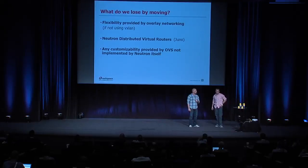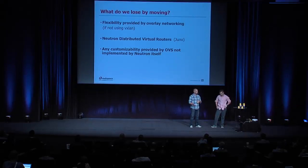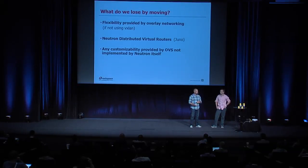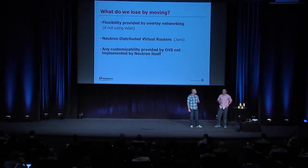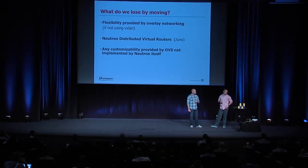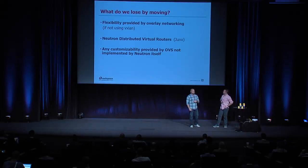We do lose a few things by moving away from OVS, like the flexibility of overlay networking. Prior to ML2, if you used the Linux Bridge plugin, you had no ability to build overlay networks. ML2 brought the ability to use VXLAN overlays with Linux Bridge. Open vSwitch, on the other hand, supported GRE, VXLAN, and STT if you're using NSX. In the Juno release, we wouldn't be able to take advantage of DVR functionality, or QoS and things outside of Neutron. Open vSwitch has a very broad feature set, but not a lot of it is utilized by Neutron currently.